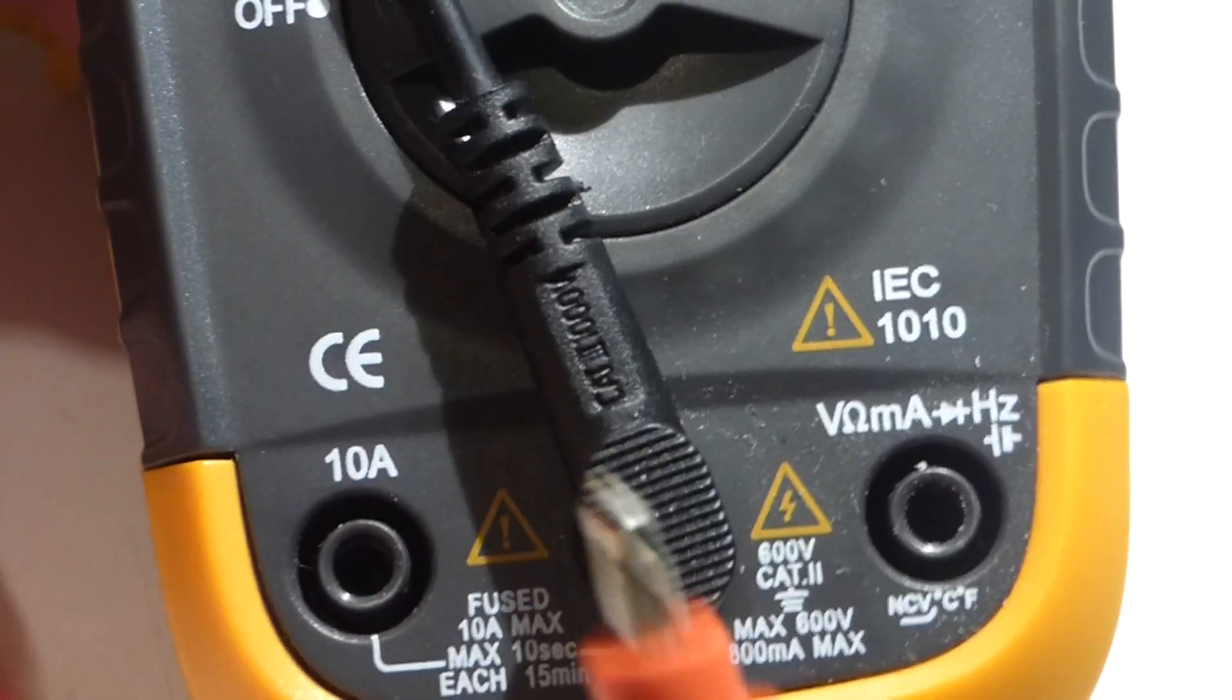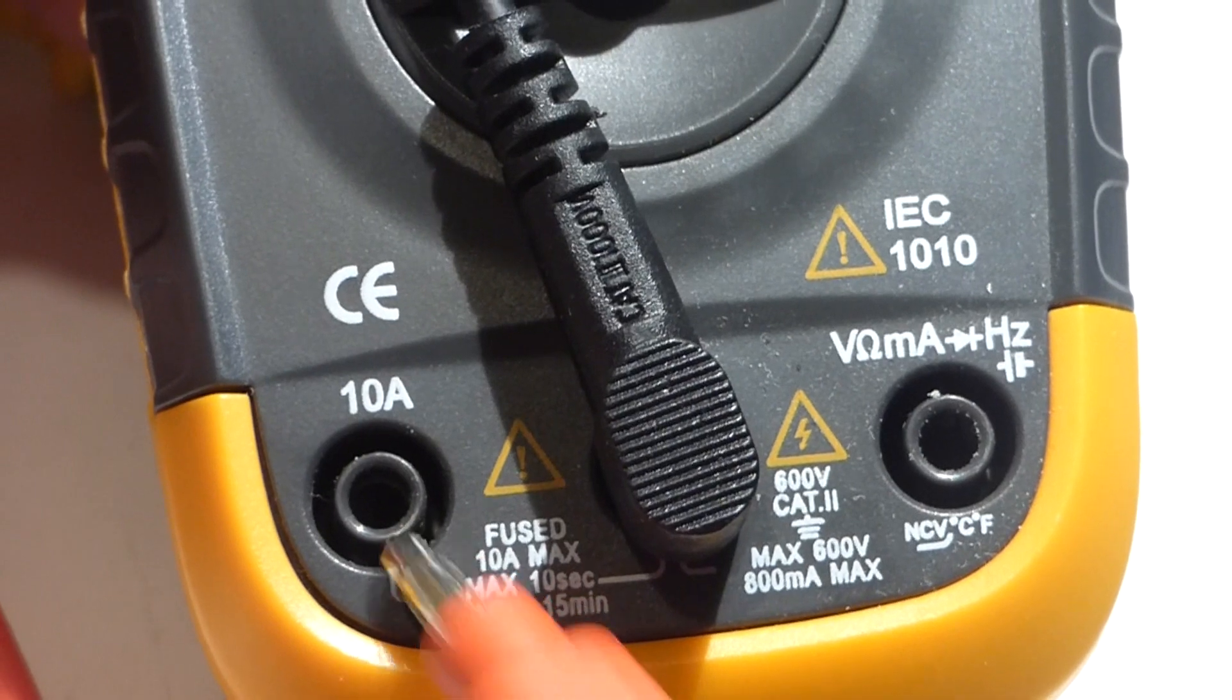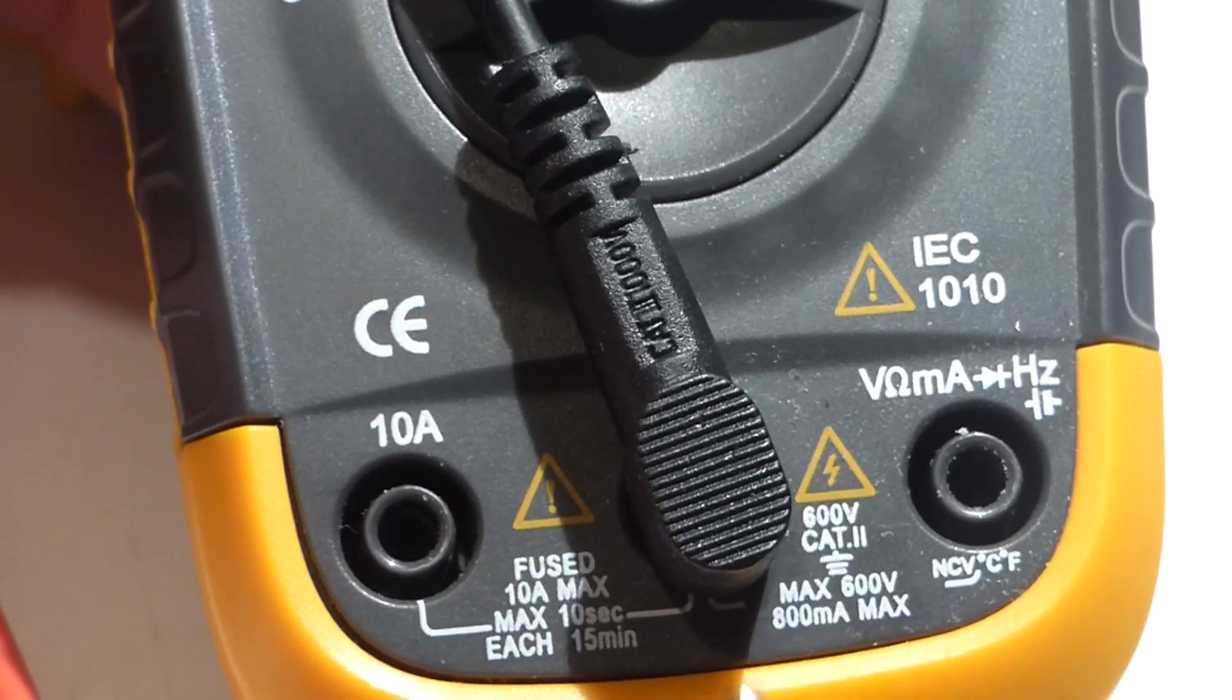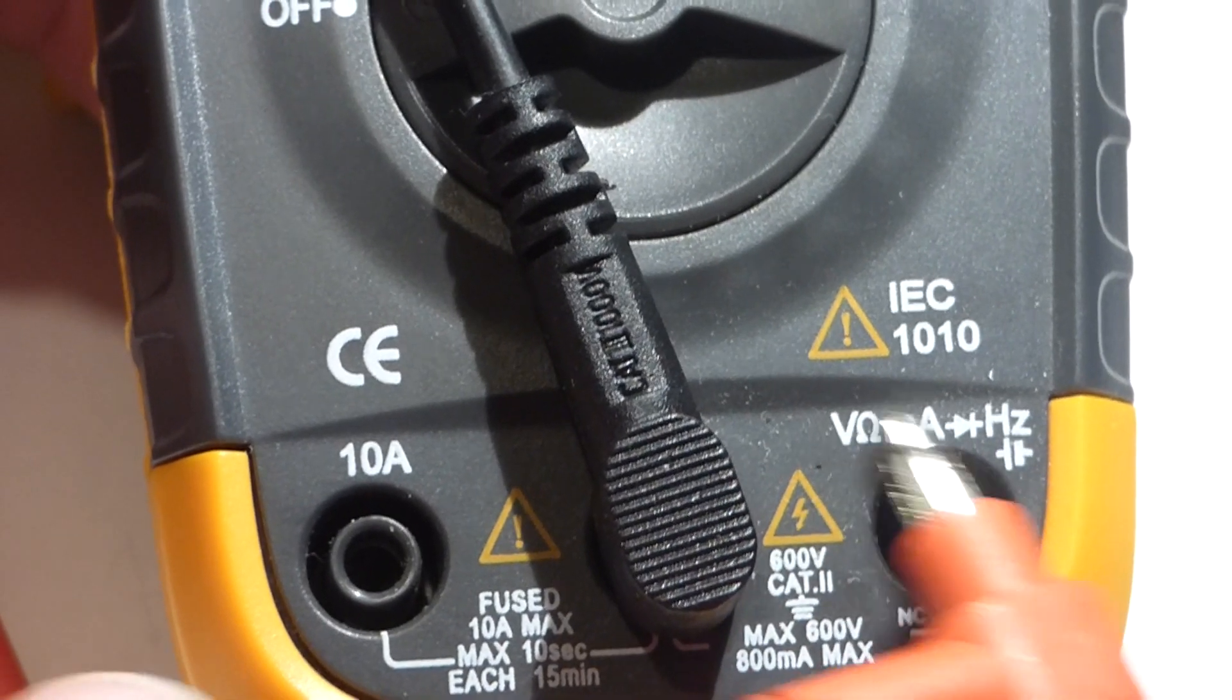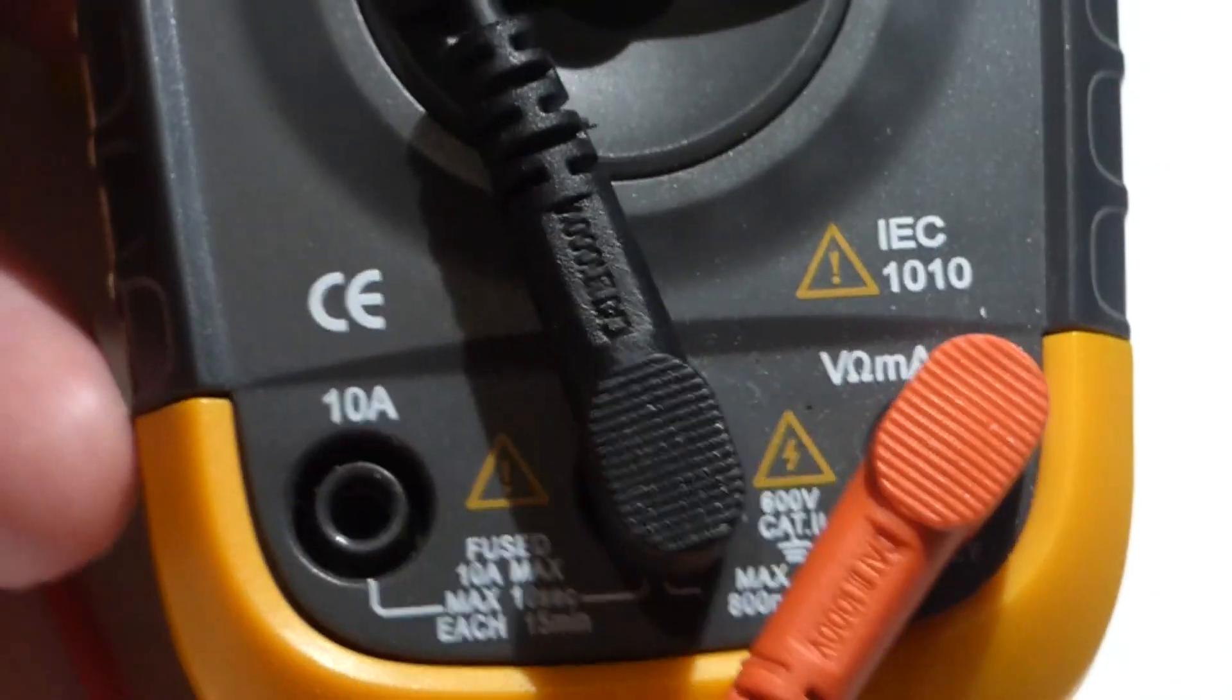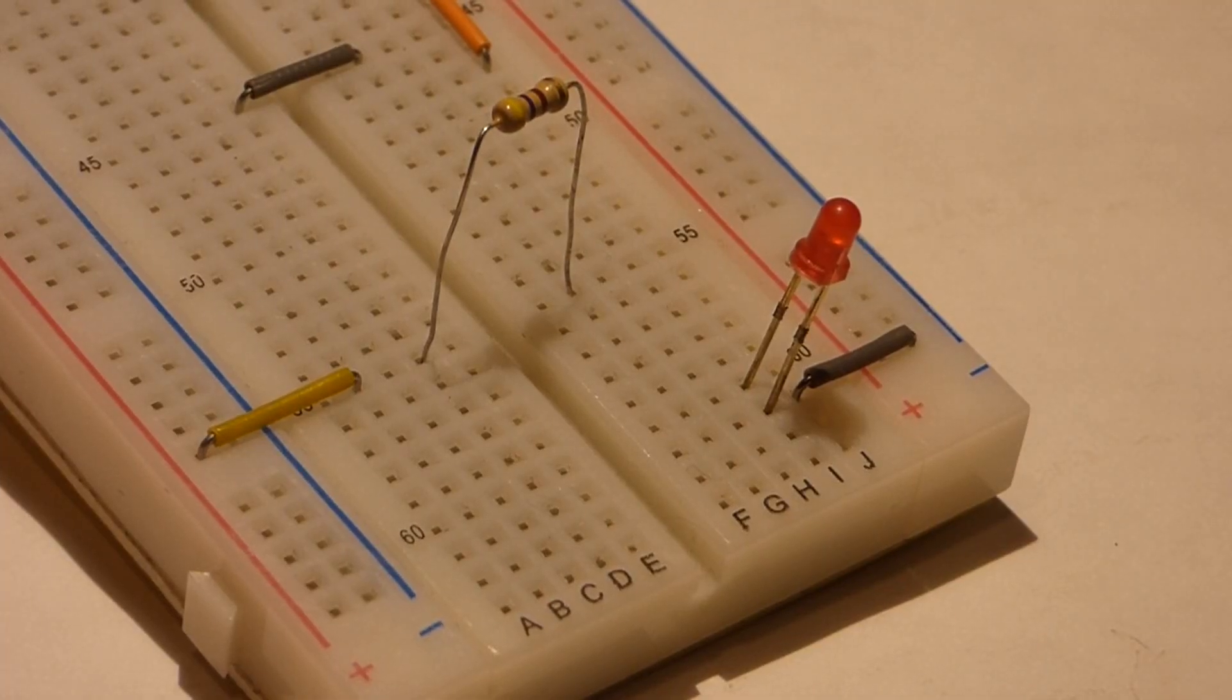So then our second probe, the red probe, we have to select between these two holes. Now this is up in the amp range, up to 10 amps. Everything else this meter does is over here. We're going to do milliamps, so we're going to put it into that hole.